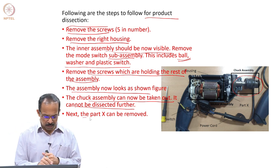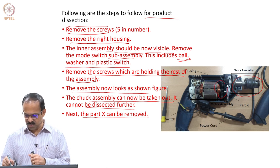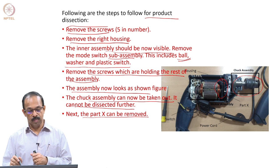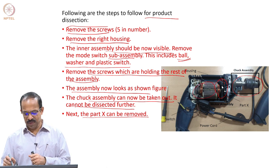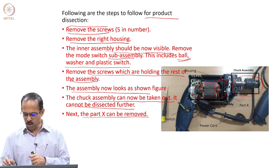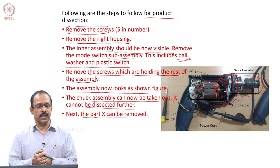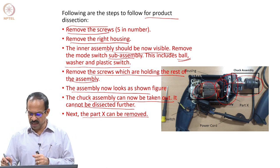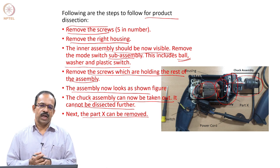The part marked X can be removed — that is basically the transmission part connecting the motor to the tool. The motor provides the torque, and that is transmitted to the tool through this assembly. You will see an assembly here which is actually the transmission, and you will be able to see the gears and other things. Now you have most of the parts taken out.